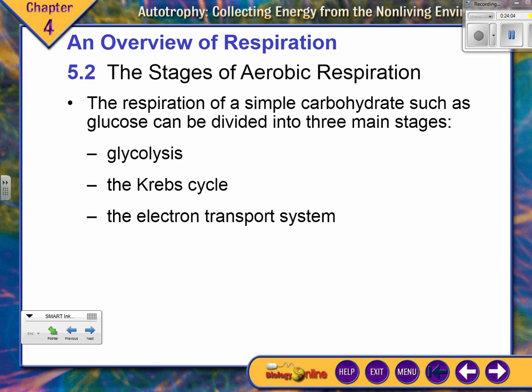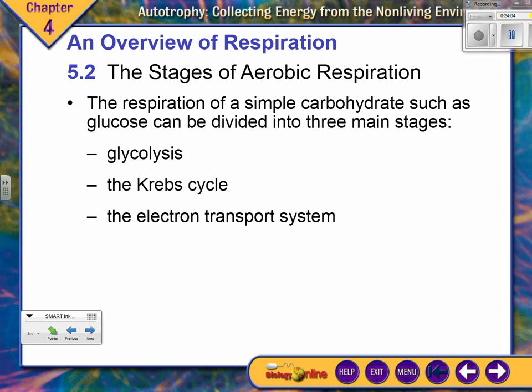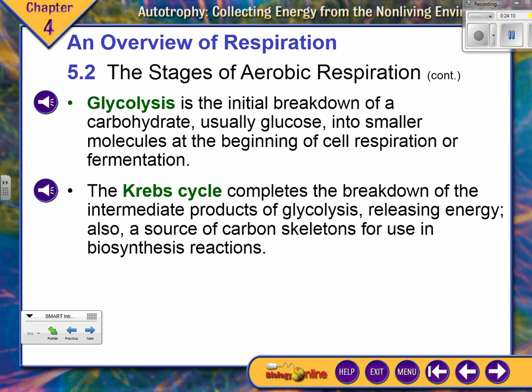The products of photosynthesis — oxygen and carbohydrates — are the raw materials for respiration. Respiration in turn provides the raw materials for photosynthesis. These two processes are deeply interconnected and cyclically dependent on each other.